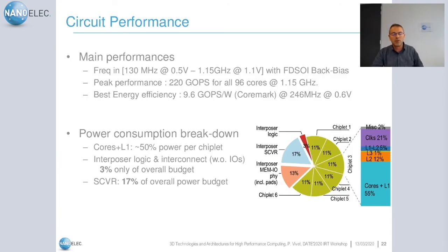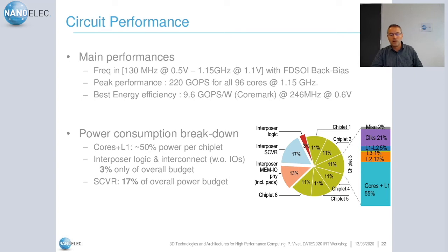The circuit achieves a wide voltage range from 0.5V to 1.1V using back-biasing in FDSOI. Peak performance is 220 GHz aggregate across all 96 cores at 1.15 GHz. Best energy efficiency is achieved at low voltage at 10 GHz/W. For the power consumption breakdown, about two-thirds of overall system power is in the chiplets — half in the cores and half in L2 and L3 caches. Only 3% of the power budget goes to the interposer interconnects for chip-to-chip communication, while 70% of the interposer budget goes to the switched-cap voltage regulators.